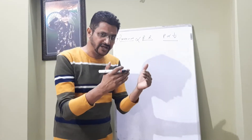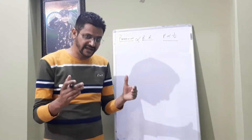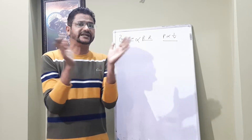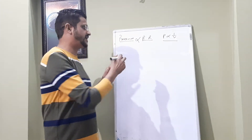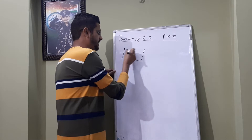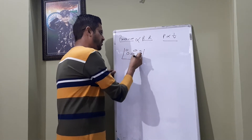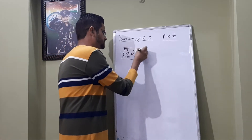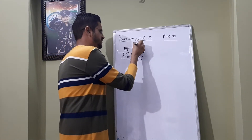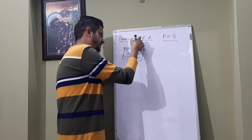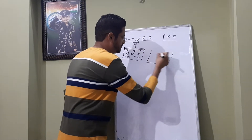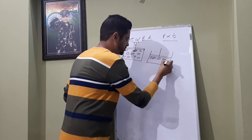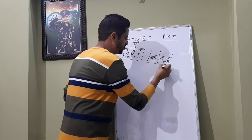When pressure increases (jab pressure increase hota hai), volume decreases. The intermolecular spaces between reactant molecules decrease. Suppose 100 molecules are in a chamber — when we apply pressure using a piston, the piston moves inward and the intermolecular spaces between reactant molecules decrease.